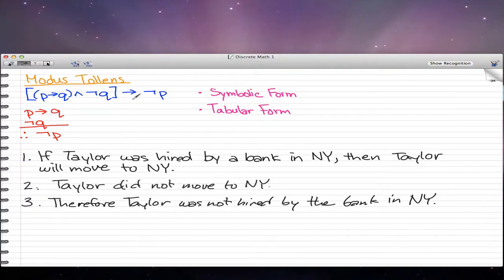This is modus tollens' symbolic form: p implies q, and negation of q implies negation of p. This is the form of modus tollens in tabular form.